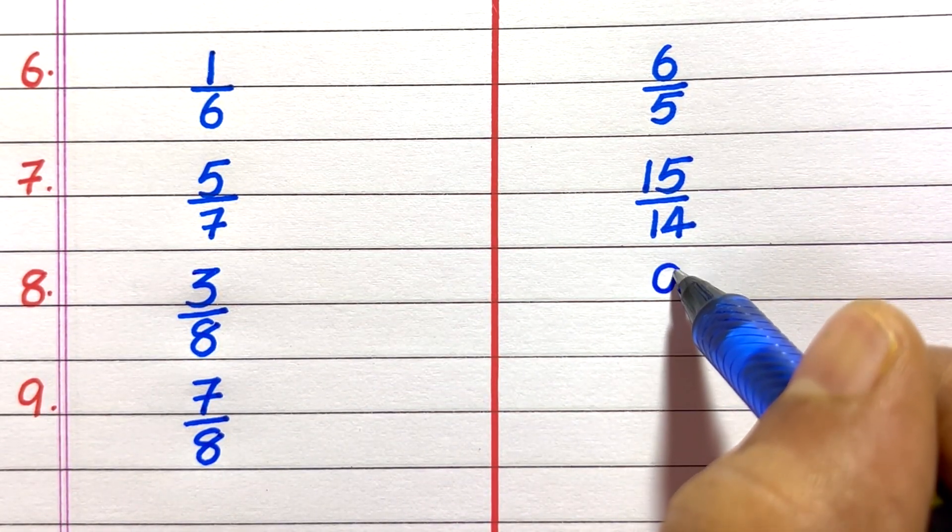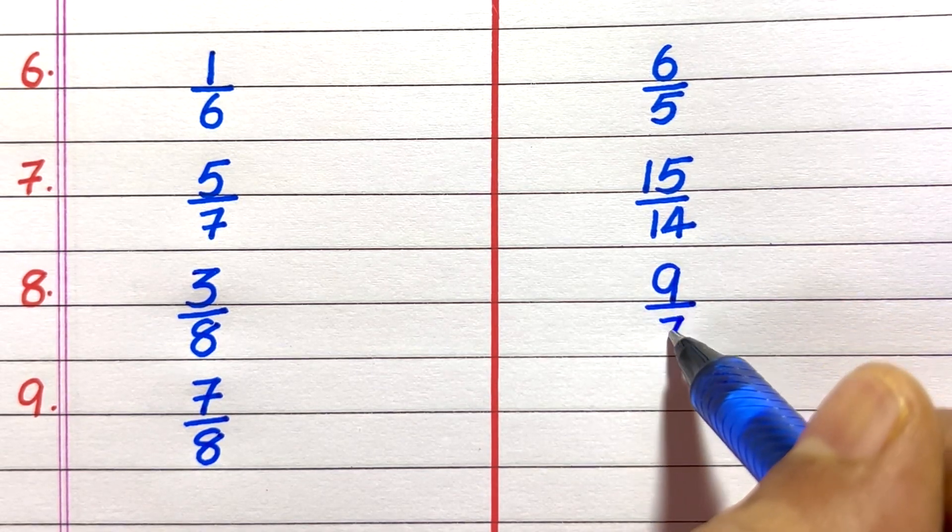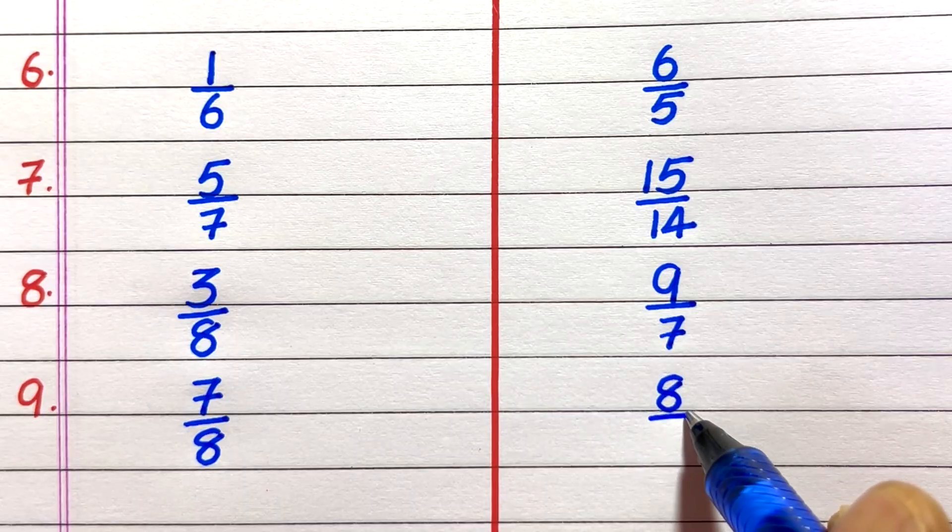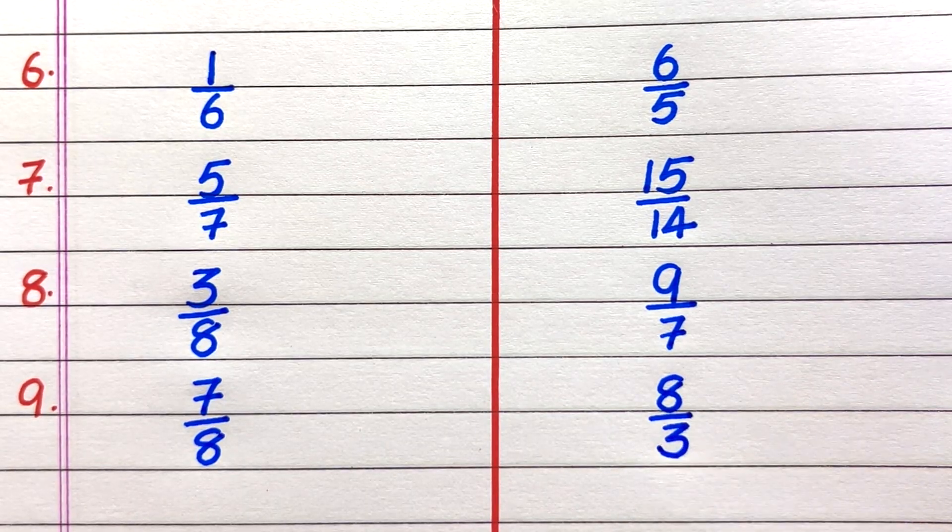Eighth example of an improper fraction is 9 by 7. Ninth, 8 by 3.